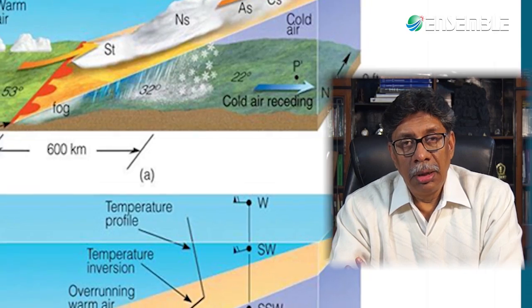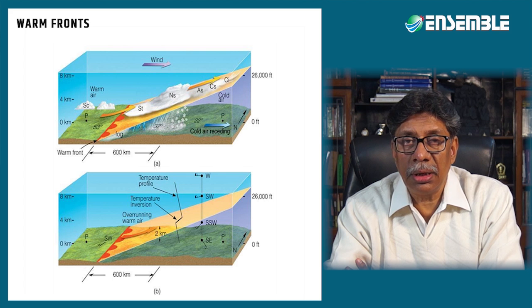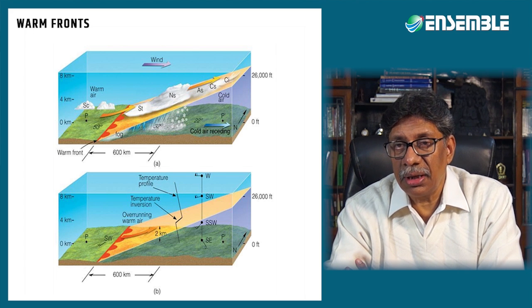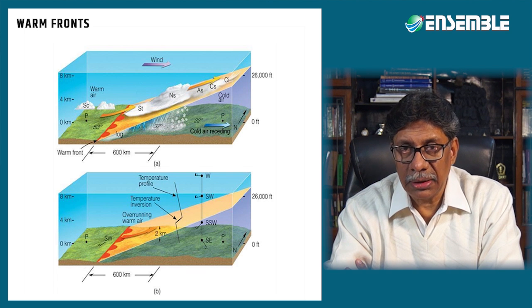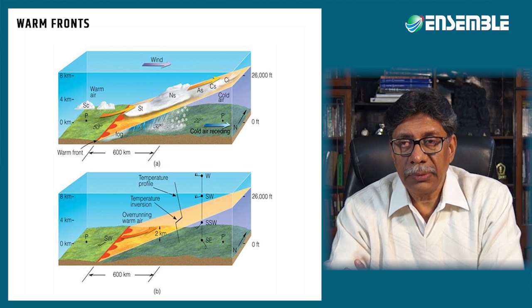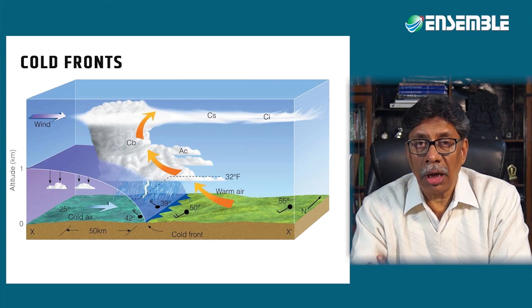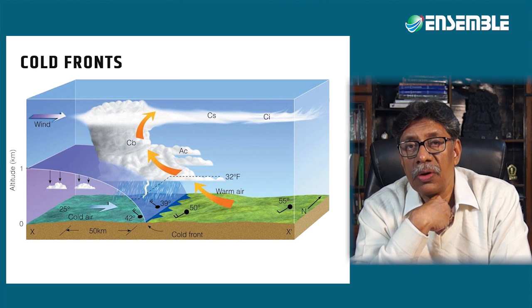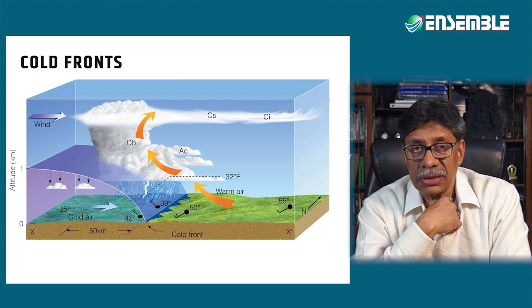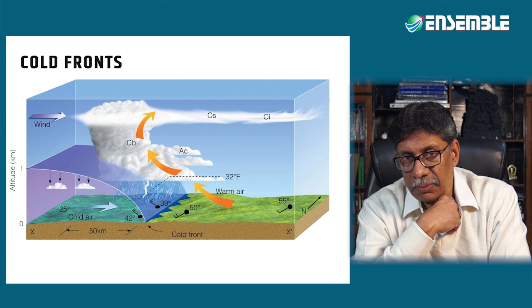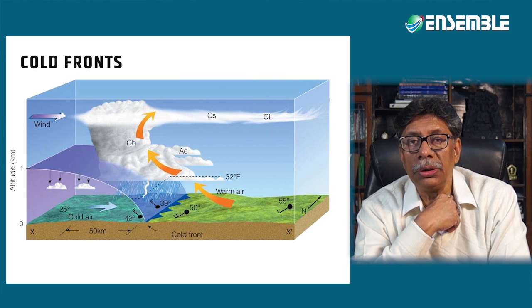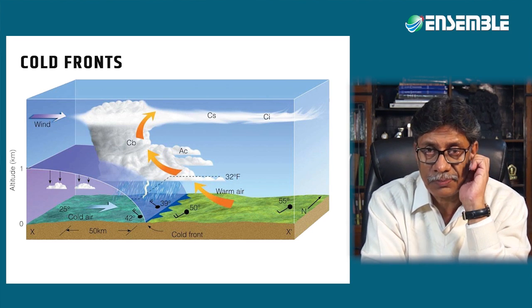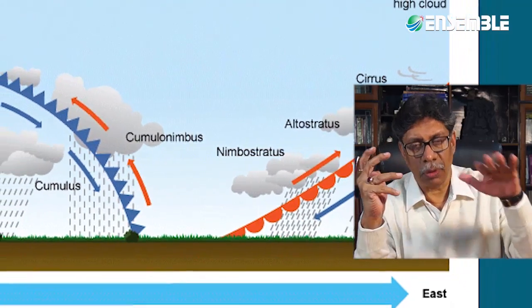Regarding weather phenomena associated with temperate cyclones: warm fronts typically have slopes of less than 1 in 100, so the ascent of air at the warm front is gradual, leading to steady layered clouds. The approach of the cold front brings a marked change in weather. The slope of the cold front is about 1 in 50, and the slope is greater near the surface where the front's progress is retarded by friction. High instability leads to towering cumulonimbus clouds and heavy precipitation in the form of thundershowers.